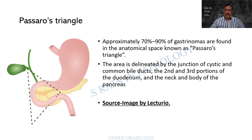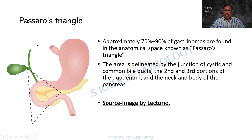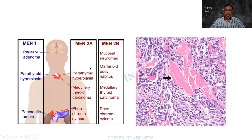Passaro triangle: approximately 70 to 90 percent of gastrinomas are found in the anatomical space called Passaro triangle. It lies between the cystic duct and common bile duct, extending to the second and third parts of the duodenum, and also includes the body and head of the pancreas. Please remember this — it has important clinical significance.